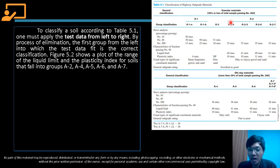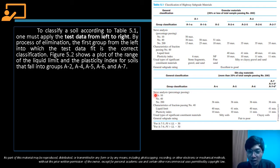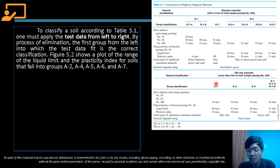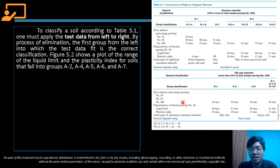The same left-to-right process applies to silt-clay materials: starting from A4, moving right through A5, A6, and A7 until all criteria are satisfied. By the process of elimination, the first group from the left into which the test data fits is the correct classification.